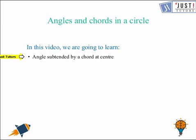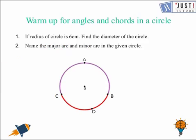Before we begin with this topic, here's a question for you. You can pause this video and try this question. In the first question, the radius of a circle is given as 6 centimeters and we have to calculate the diameter. As we know that diameter is double the radius, so diameter in this case will be equal to 12 centimeters.